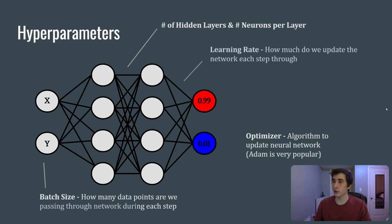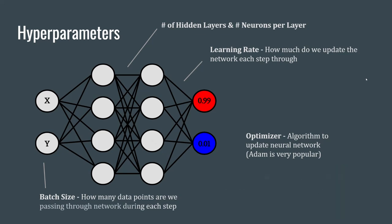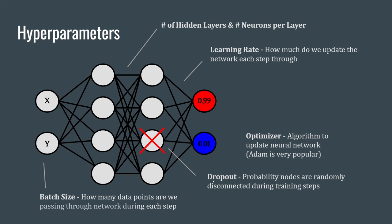Another hyperparameter is the learning rate — how much the weights update each time we see a batch of inputs. A higher learning rate means updates of greater magnitude; a lower one means smaller updates. Dropout is also important: randomly disconnecting nodes with a certain probability forces the rest of the network to step up and do more, so it can't rely on a single node to learn everything. This helps the network generalize to conditions it hasn't seen.